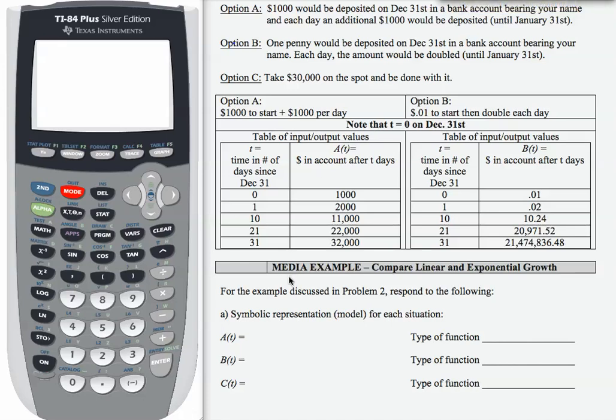Here we are asked to analyze the data in the dollars and cents problem and come up with a symbolic representation or model for each of the situations. I've included the situations up here so that you can refer to them and review what the different options were. I've also included a subset of each of the tables for option A and B so we can check our models and see if they're working.